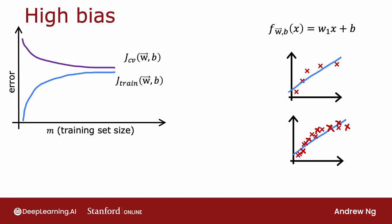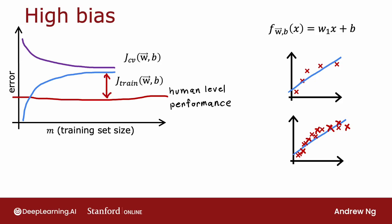Beyond a certain point, even as you get more and more examples, not much is going to change about the straight line you're fitting. It's just too simple a model for this much data, which is why both JCV and JTrain tend to flatten after a while. And if you have a measure of baseline performance, such as human-level performance, it'll tend to be a value lower than your JTrain and JCV. So human-level performance may look like this, and there's a big gap between the baseline level performance and JTrain — which is our indicator for this algorithm having high bias. One could hope to do much better if only we could fit a more complex function than just a straight line.